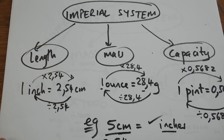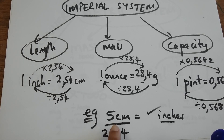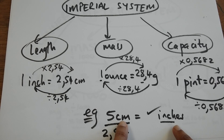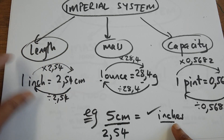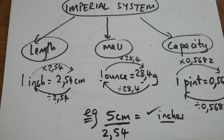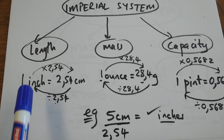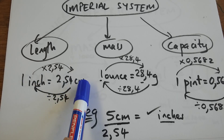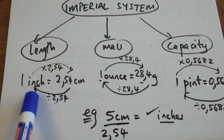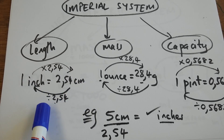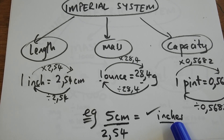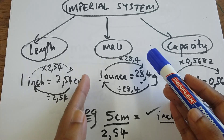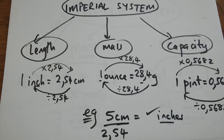So if I take the example of 5 centimeters and want to convert it into inches, I go to my conversion factor and decide the direction. I'm moving from centimeters into inches, which means I divide by 2.54 in order to convert into inches.